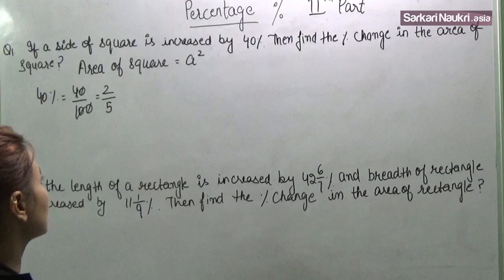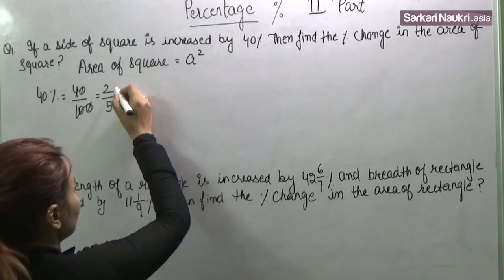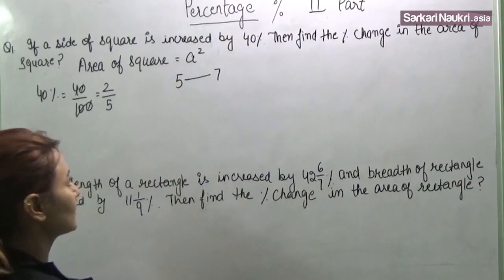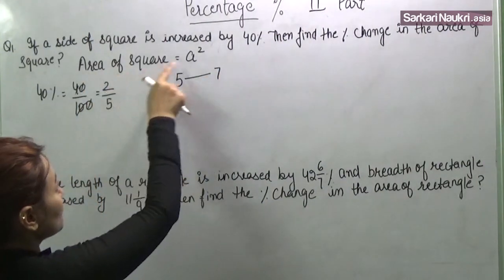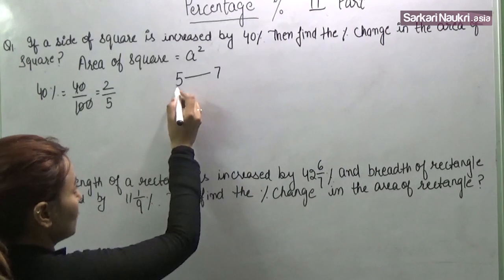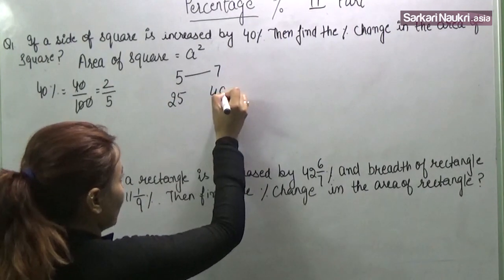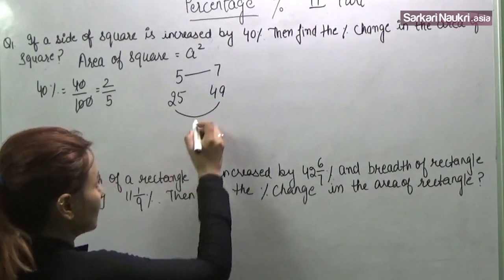This is 2 by 5. Now it is increased, so it is increased 2 by 5. So 5, this will be 7. This is the area of square is A square. Square of 5 is 25, square of 7 is 49. What is the difference? Difference is 24.